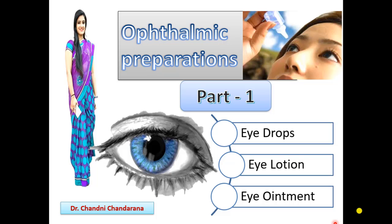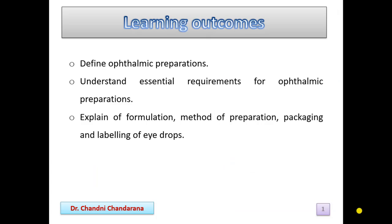Dear learners, today we are going to study about ophthalmic preparations. This video is divided into three parts. In the first part, we will see in detail about eye drops. In the second part, we will see about eye lotion and eye ointment. And in the third part, we will see how we can evaluate the ophthalmic preparations and what are the parameters for that. The learning outcomes of this lecture are: you will be able to define ophthalmic preparations, understand essential requirements for ophthalmic preparation, and explain the formulation, method of preparation, packaging and labeling of eye drops.